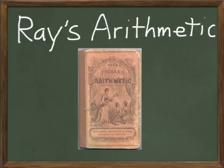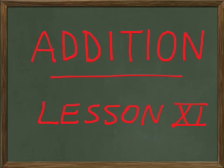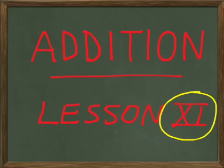All right, the lesson we're doing in Ray's Arithmetic today is lesson number 11. I want to point out something about the way I have the lesson number written here. You see this symbol right here? See how it says XI? That's actually the symbol for 11.